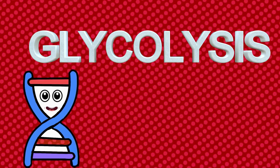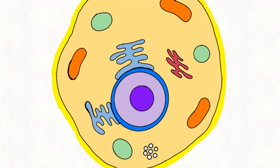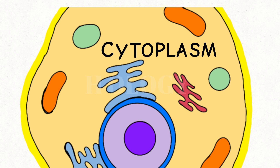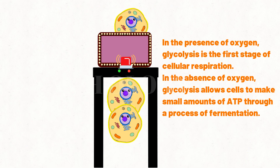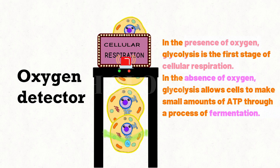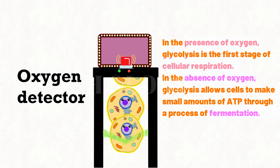Glycolysis takes place in the cytoplasm, the fluid-filled region of the cell outside the nucleus. Glycolysis can occur with or without oxygen. In the presence of oxygen, glycolysis is the first stage of cellular respiration. In the absence of oxygen, glycolysis allows cells to make small amounts of ATP through a process of fermentation.